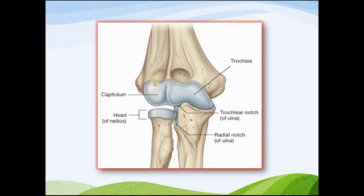In the humerus there are condyles at the lower end, medially and laterally located, which are known as the trochlea and the capitulum respectively. In the ulna, there is a trochlear notch which articulates with the trochlea in the trochlear groove, making the humero-ulnar joint. The head of the radius articulates with the capitulum to make the humero-radial joint.